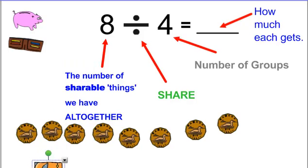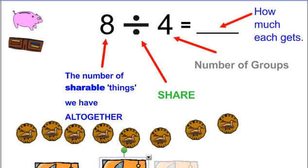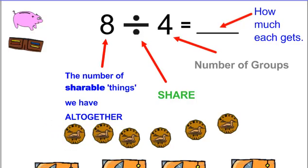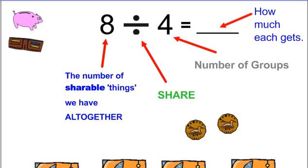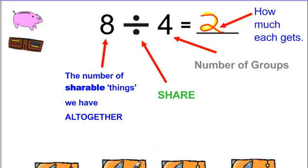Let's say we pick pockets. We have eight dollars to share — those are the shareable things — and I'm sharing among four groups, so I need four pockets. One, two, three, four. Now each person gets one, one, one, one. We keep going until we run out, and we know we did a good job once everyone has the same amount. They all get two. So we write two — that's our answer.